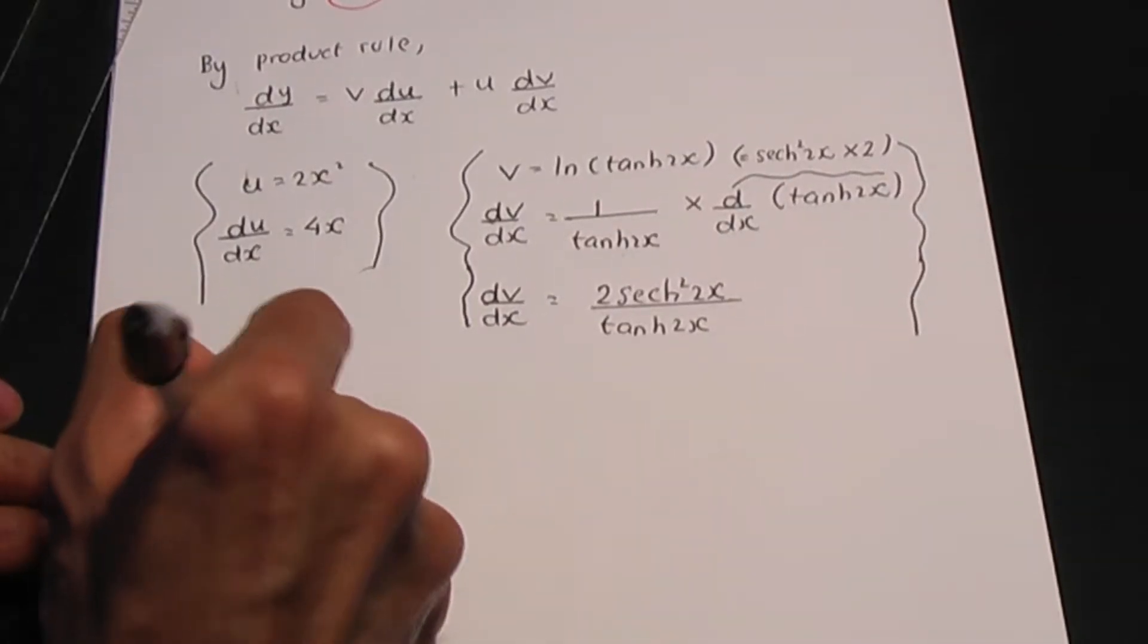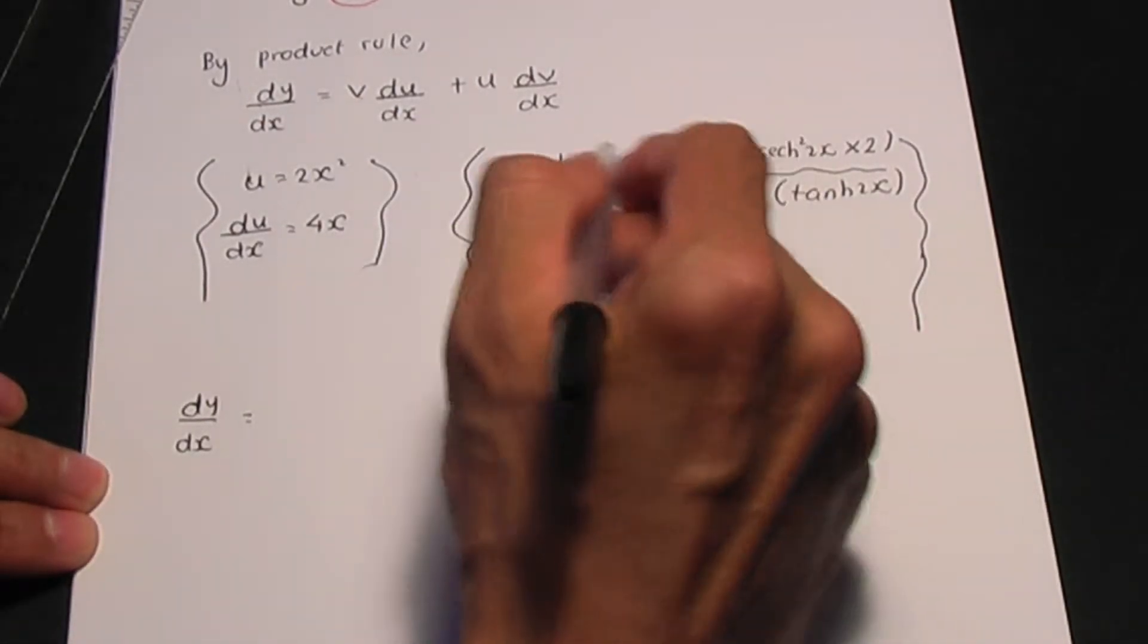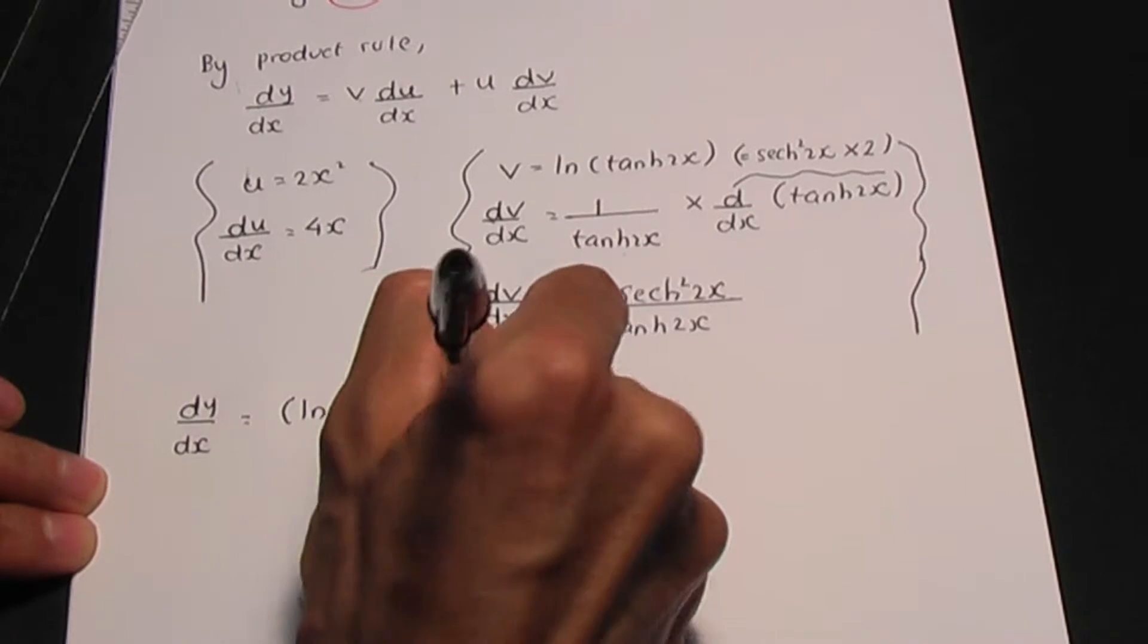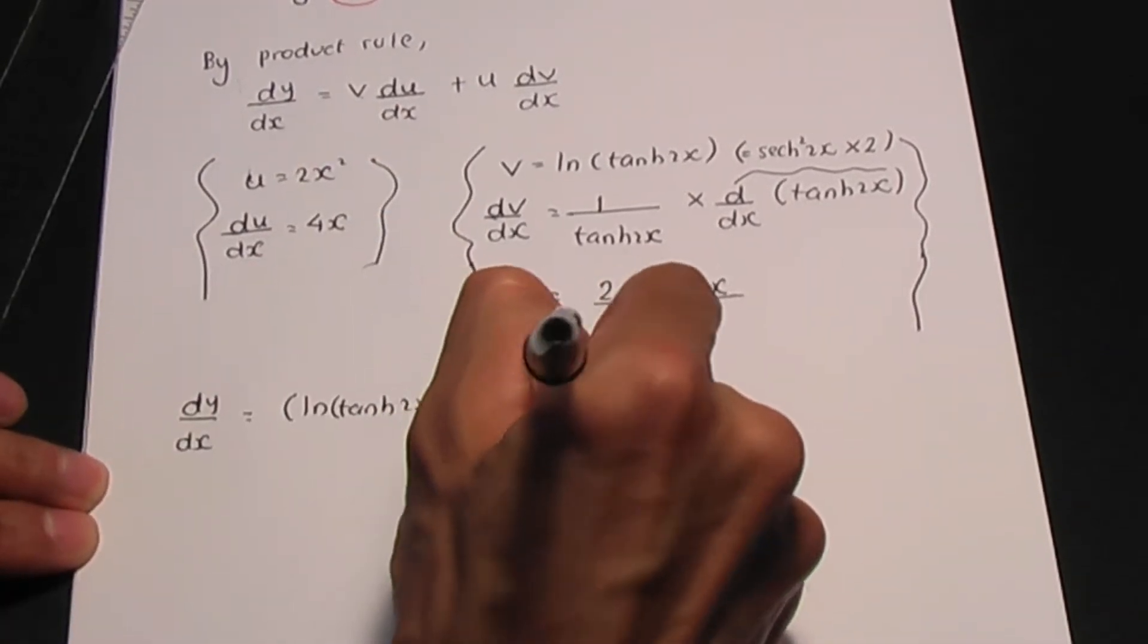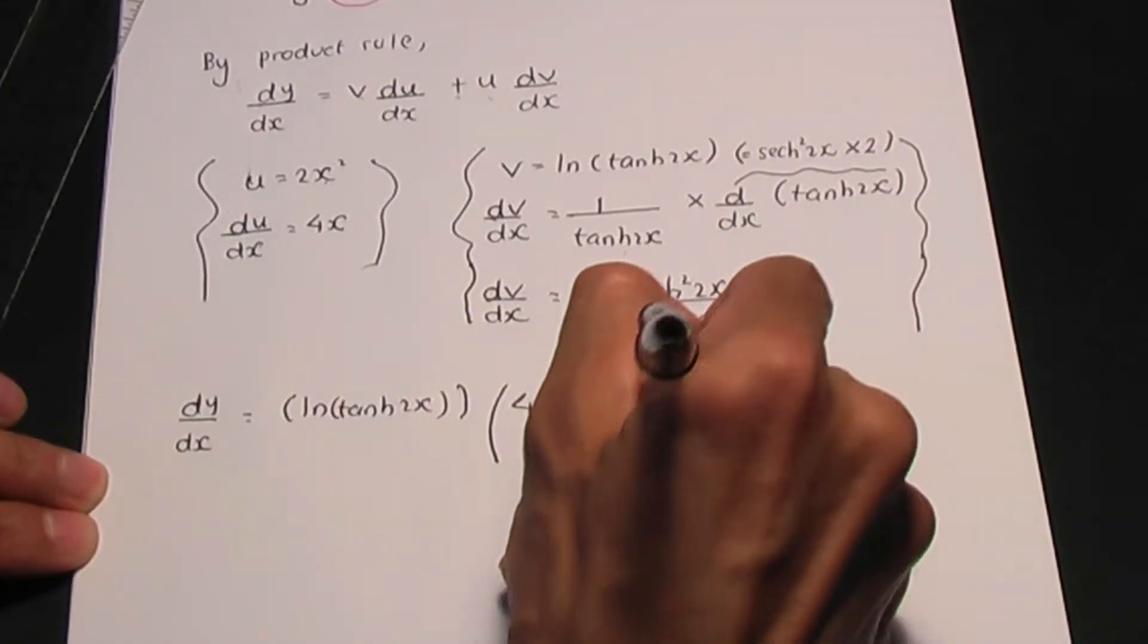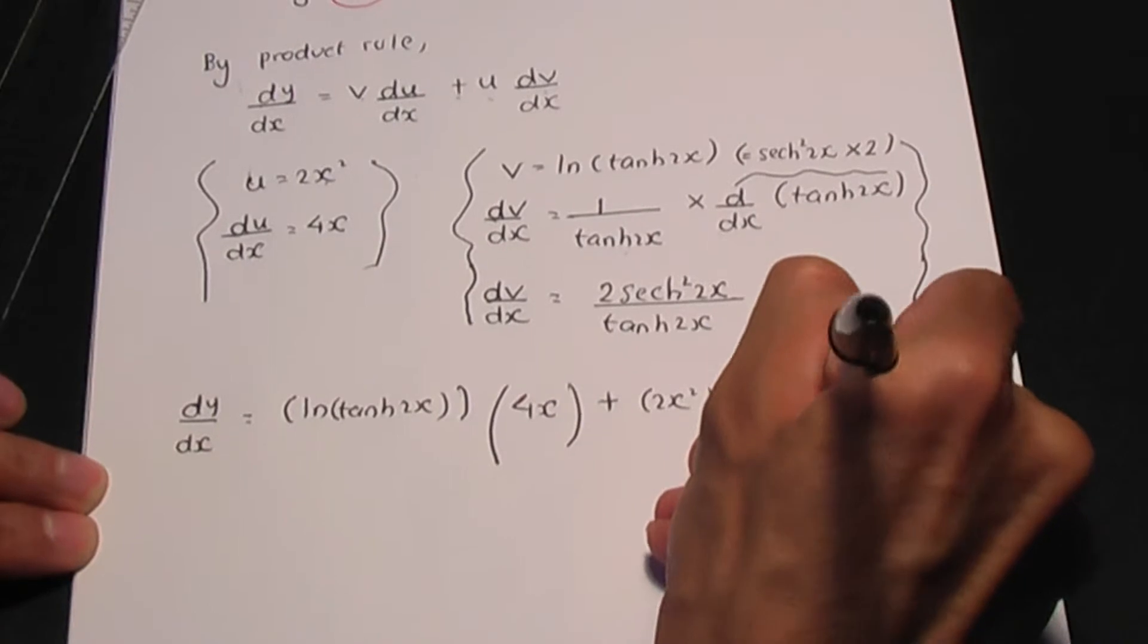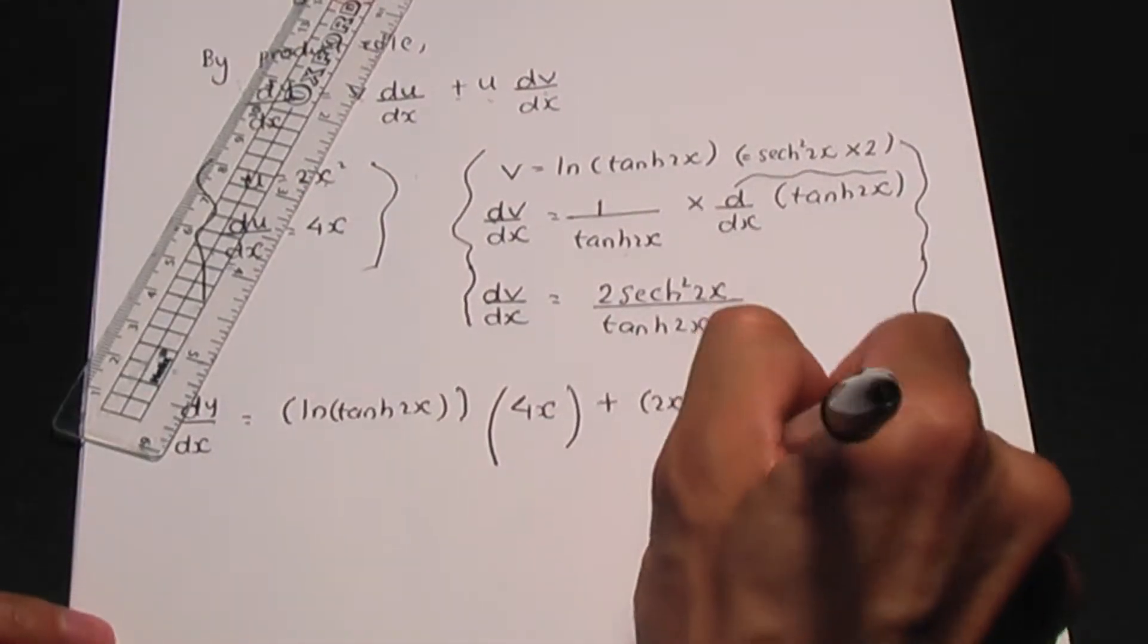That would make dy over dx equal to v, which is in this case ln hyperbolic tan 2x, so that's v, times du over dx which is 4x, plus u which is 2x squared, times dv over dx which is 2 hyperbolic sec squared 2x divided by hyperbolic tan 2x.